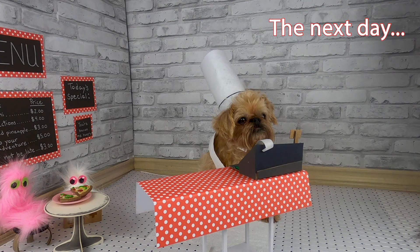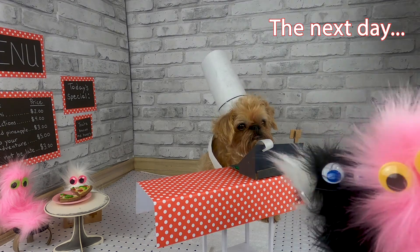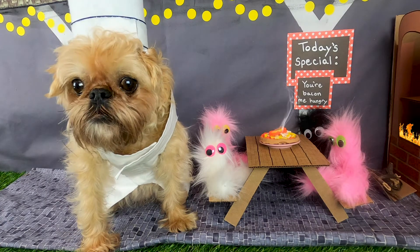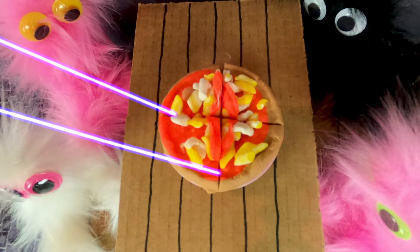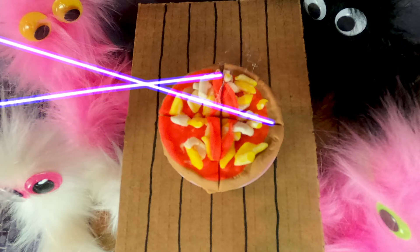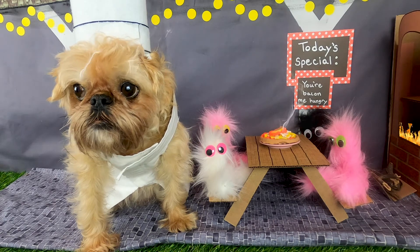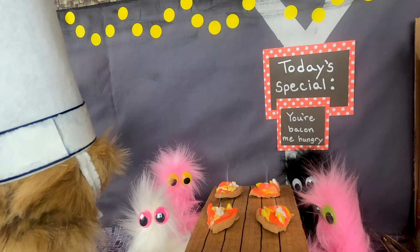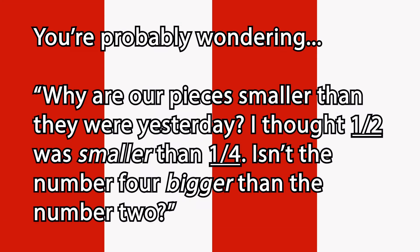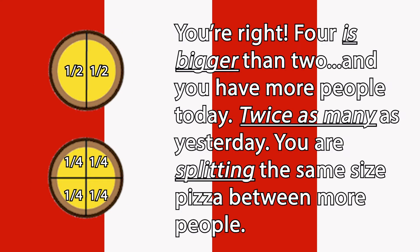Welcome in. We're back — we brought some friends with us. There's four of you! You're probably wondering why our pieces are smaller than they were yesterday. I thought one out of two was smaller than one out of four. Isn't the number four bigger than the number two? Four is bigger than two, and you have more people today — twice as many as yesterday. You are splitting the same size pizza between more people.